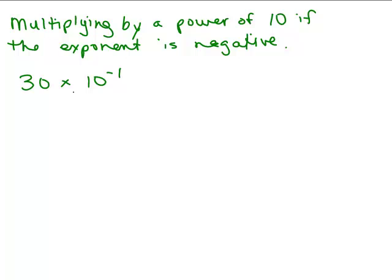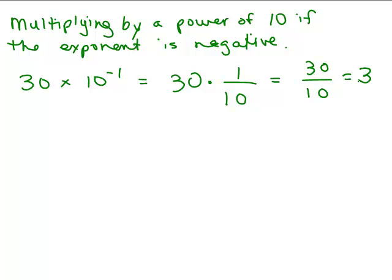Let's do 30 times 10 to the negative 1. What we notice here is the exponent on 10 is negative, so we have to remember what that means. What does 10 to the negative 1 mean? Well, it means 30 times 1 tenth. And then what you're really doing is 30 divided by 10. That gives us an answer of 3. So when you multiply by 10 to some negative exponent, you're really dividing by a power of 10.